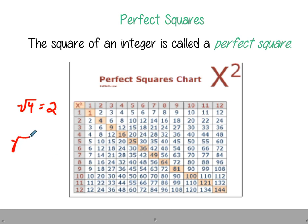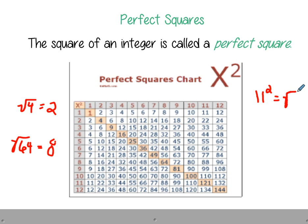The square root of 64: we know that 8 times 8 equals 64. We always need to know that the square root and squaring something are opposites. So if 11 squared equals 11 times 11 which equals 121, then on the flip side, the square root of 121 equals 11. They're opposites of each other.